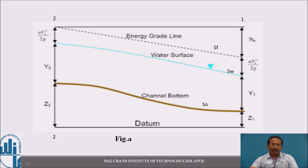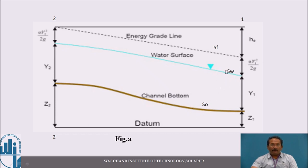Observe this figure carefully. The channel bottom slope is denoted as S₀. The blue line is the water surface line, denoted as S_w. The top line is the energy grade line or energy gradient line, denoted as S_f. Note that S_f is fluctuating — it is not constant.